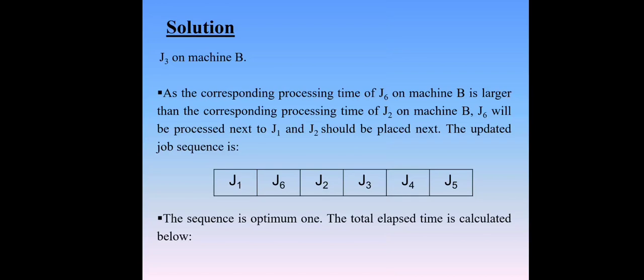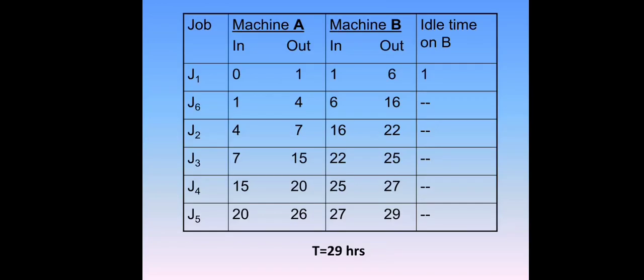Now we find out the total elapsed time. The table has columns: job, machine A, machine B, and idle time on capital B. We put the sequencing order J1, J6, J2, J3, J4, and J5. Machine A has two sections: time in and time out. Initially, time in is 0. J1 processing time on machine A is 1 hour, so 0 plus 1 equals 1. J6 starts from 1, with a processing time duration of 3 hours, so 1 plus 3 equals 4.